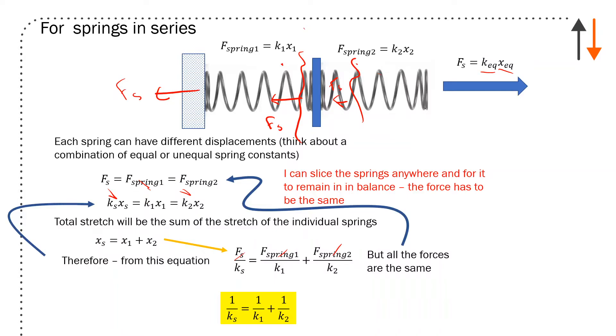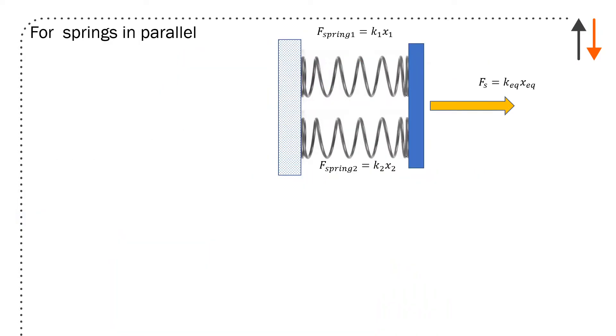If on the other hand I have two springs in parallel, their displacement is going to be constant. The total spring force is still the same, but each of the springs are going to contribute differently. So if k_1 doesn't equal k_2, then the force of the spring equals force of spring one plus force of spring two: k_s times x_s equals k_1 times x_1 plus k_2 times x_2.